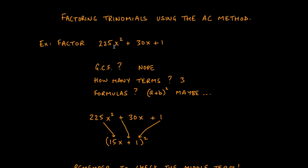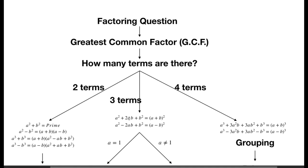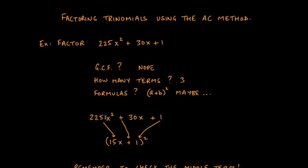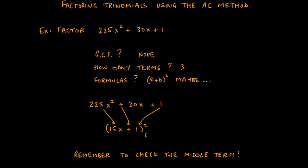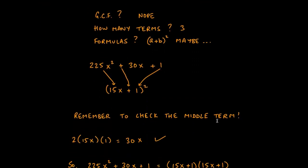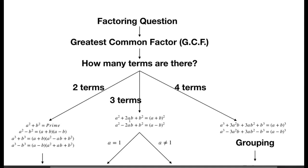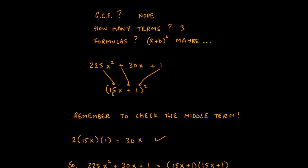How many terms do we have? Three terms. We check to see if the formulas work. Well, 225 is a perfect square, 1 is a perfect square, and all the signs are plus, so maybe the formula a² + 2ab + b² = (a + b)² might work. We find the square root of 225x², which is 15x, and the square root of 1 is 1. We copy down the sign in the middle and put a square around the whole thing.